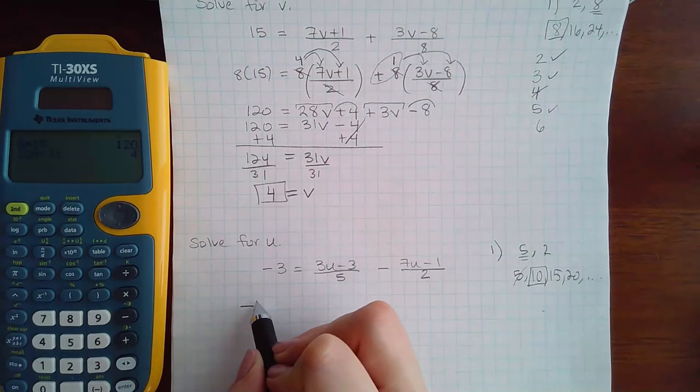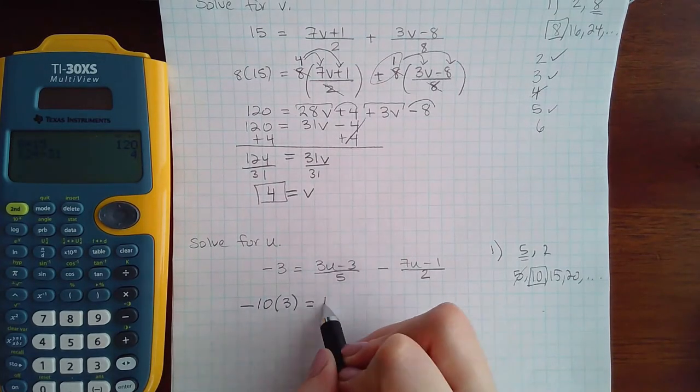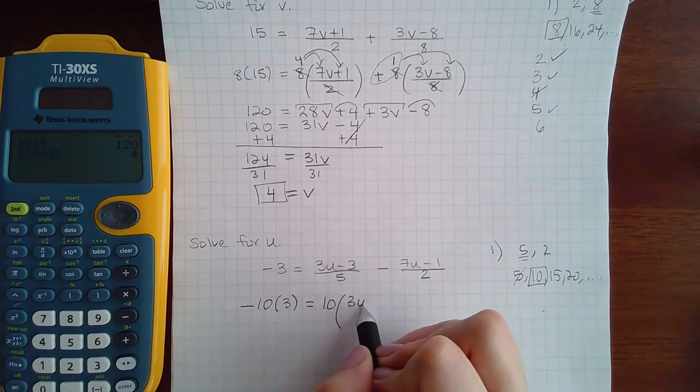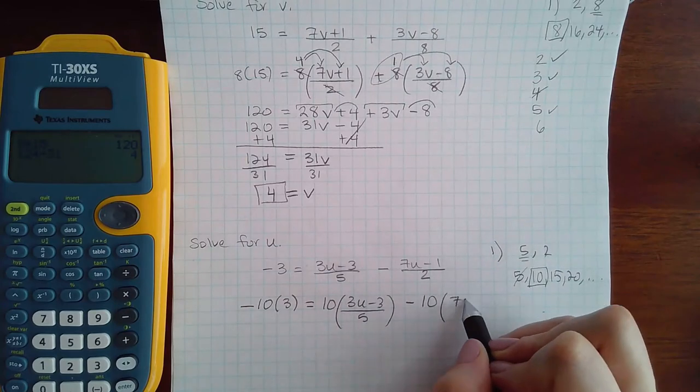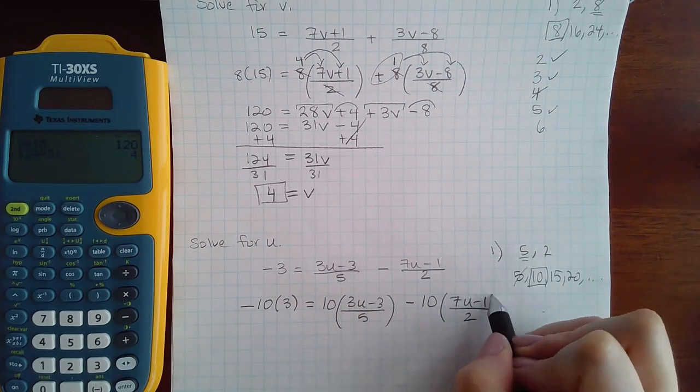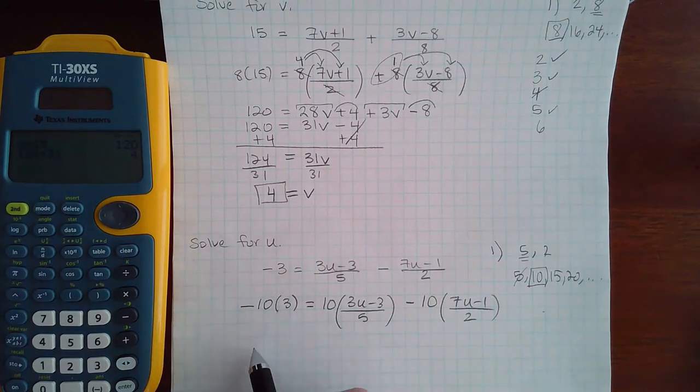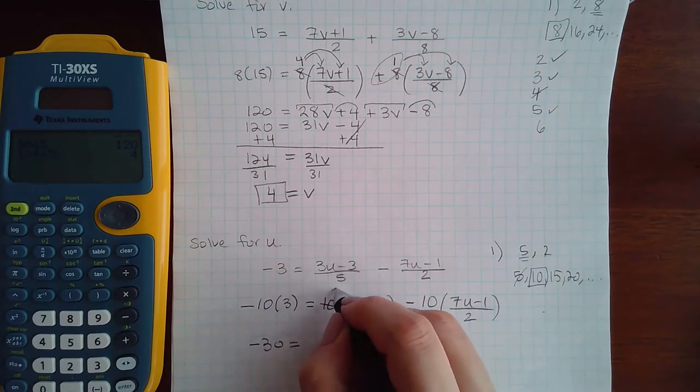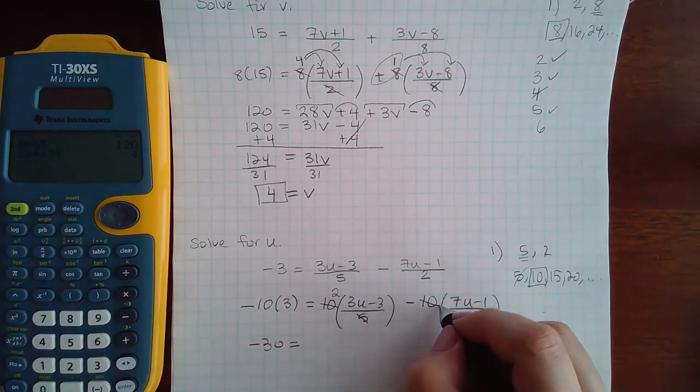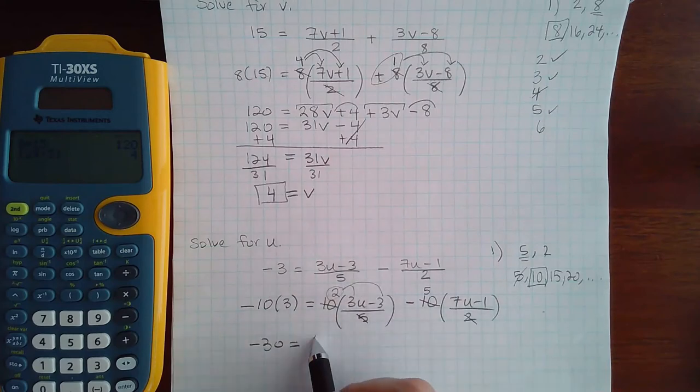So I'm going to put my minus sign and then my 10 times 3, my equal sign, 10 times this whole fraction, my minus sign, 10 times this whole fraction. So then I end up with negative 30 equal to 5 goes into 10 twice and 2 goes into 10 five times.